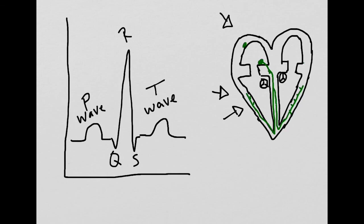One aspect that is not shown clearly on the EKG is when the atria are repolarized. This is because the ventricular QRS wave is so large that the atrial repolarization wave is lost. Thank you for watching and I hope this helps you.